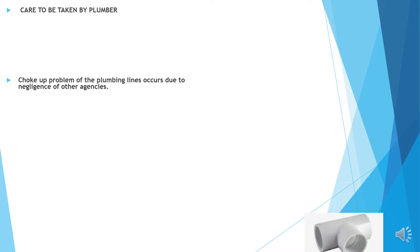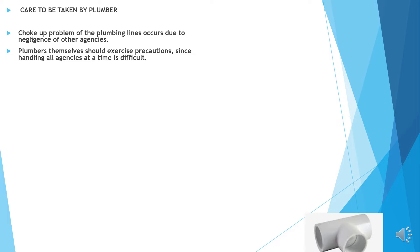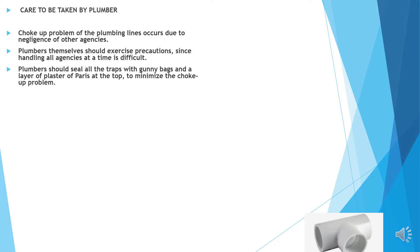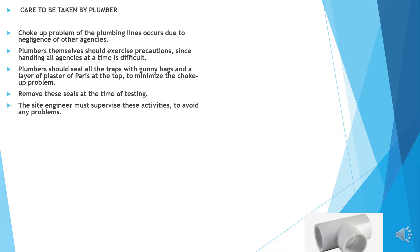Care to be taken by the plumber. Choke-up problems of the plumbing lines occur due to the negligence of other agencies. Plumbers themselves should exercise precaution since handling all agencies at a time is difficult. Plumbers should seal all the traps with gunny bags and a layer of POP on top to minimize choke-up problems. Remove these seals at the time of testing. The site engineer must supervise these activities to avoid any problems.